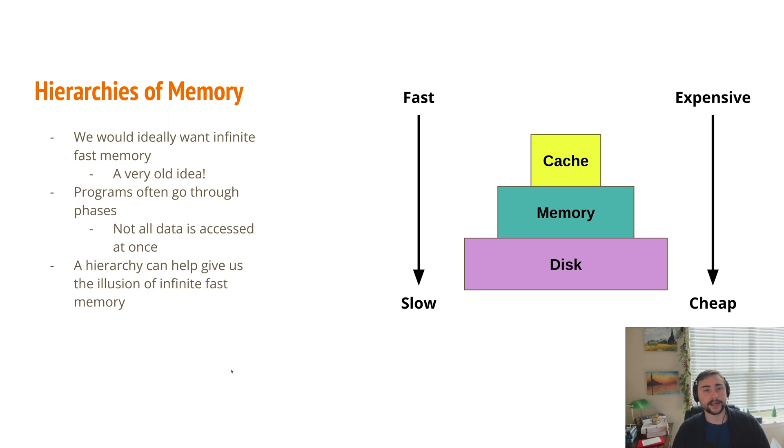So moving on to another category of ideas, we have this one of hierarchies of memory. Now, ideally, we would want an infinite amount of fast memory, and this is a very old idea dating all the way back to John von Neumann's report on the first stored program computer. He said that programmers would eventually want an infinite amount of memory for their applications. But unfortunately, this really isn't practical. We can't have an infinitely sized cache. Now, luckily for us though, programs often go through phases, so we're not typically accessing all of the data that our program will eventually access all at once.